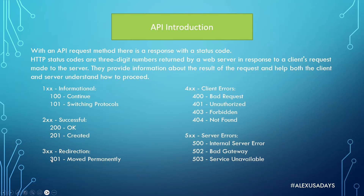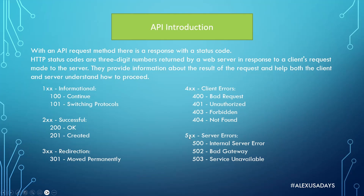If you get back a 300-level status code, that means some sort of redirectional action happened — for example, 301 means the resource was moved permanently. If you get back a 400-level code, that means some sort of client error happened. One of the most common is 404 'not found' — probably all of us have dealt with a 404 error when trying to access a web page and the resource isn't there. The worst one you can get is 500. A 500 means an error actually happened on the server and wasn't handled properly — the server returned that error to the user. So 400s are more acceptable errors; 500 means something bad is happening on the server, like an internal server crash.